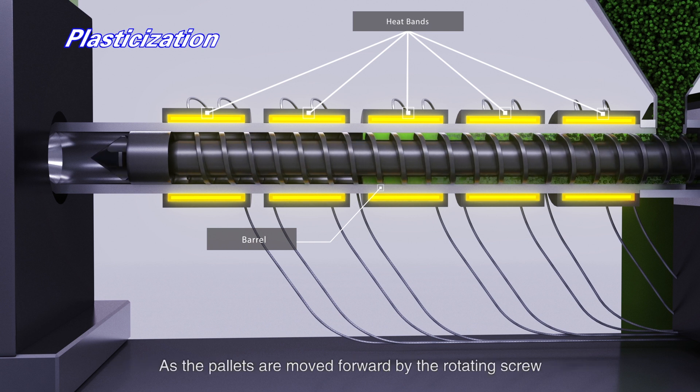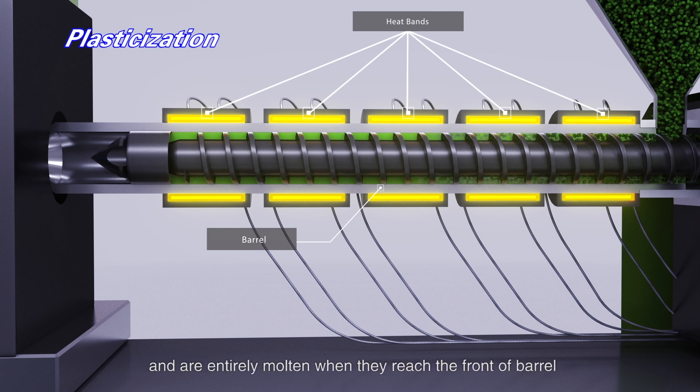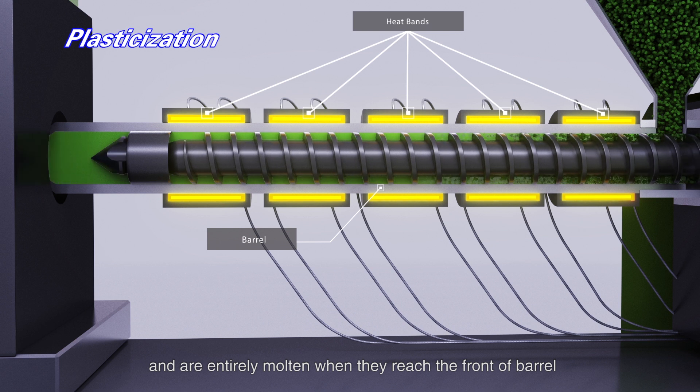As the pellets are moved forward by the rotating screw, they are gradually melted and are entirely molten when they reach the front of the barrel.